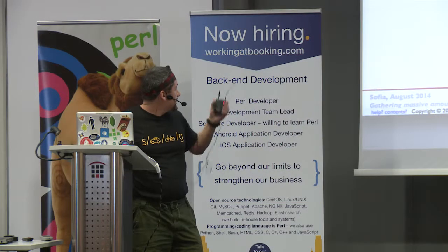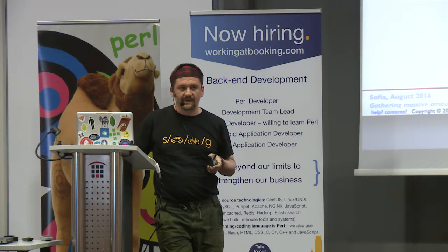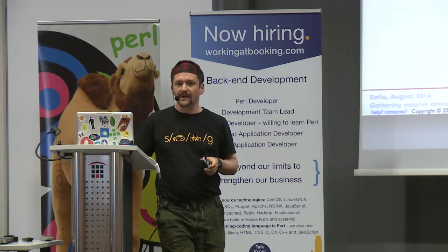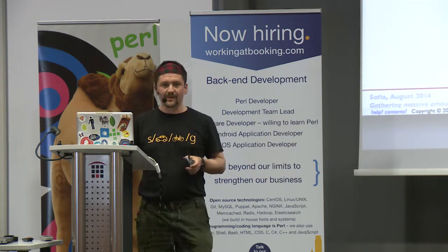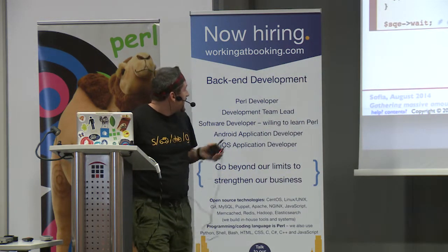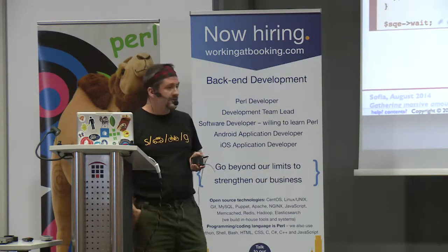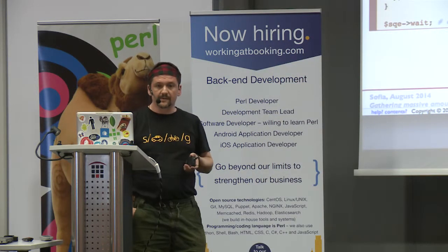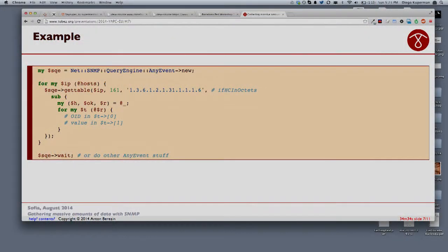It is on GitHub and there is a Perl module. I would imagine that if any of you would like to write a Python or Ruby module for it, you are very welcome. In the simplest form it looks like this: you have a lot of hosts and you just iterate over them and say, okay, give me a particular table or a bunch of object IDs, and then there is a callback in which you just get the results.